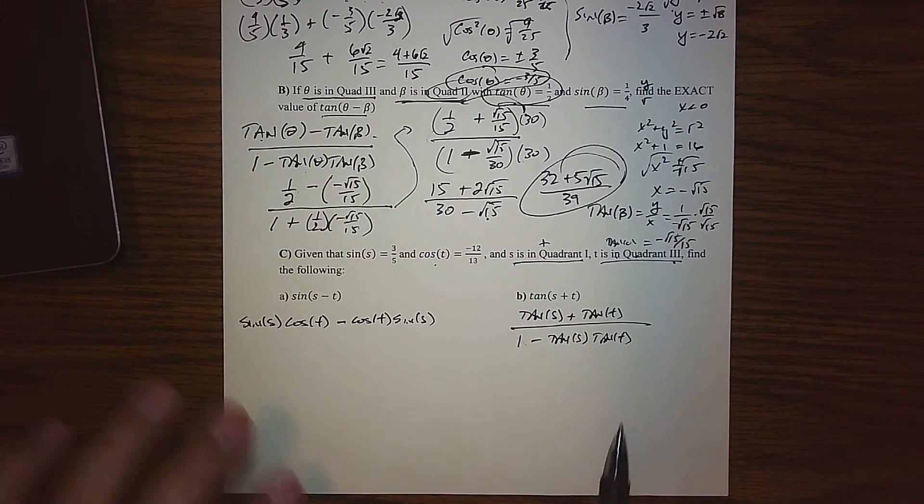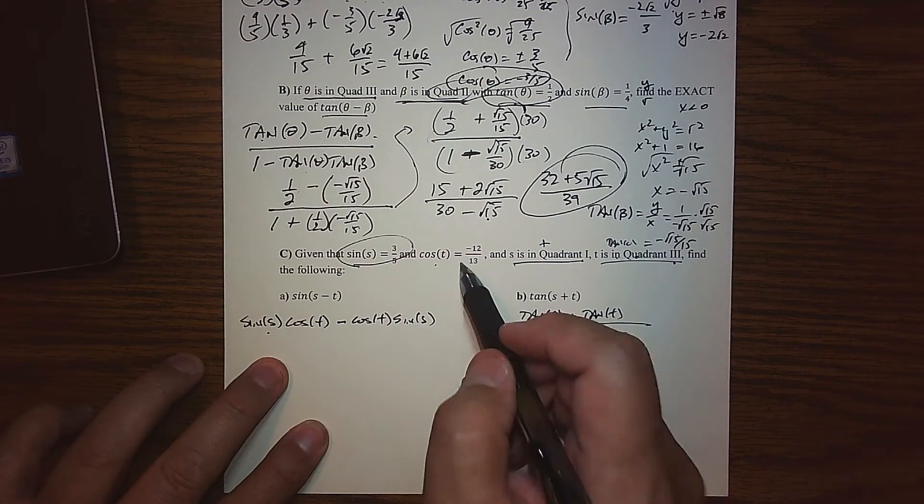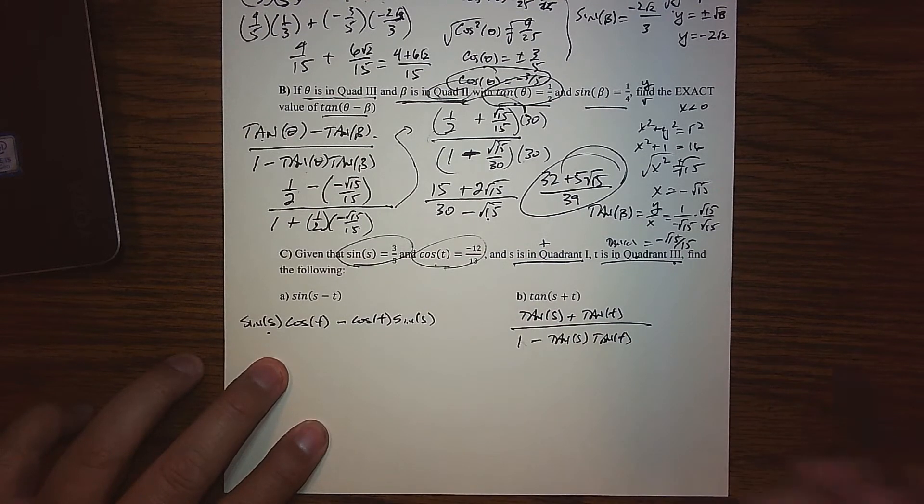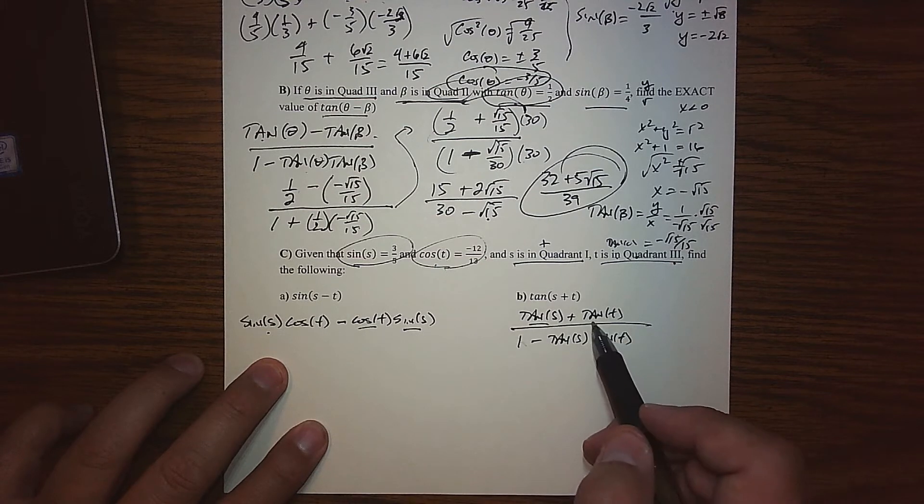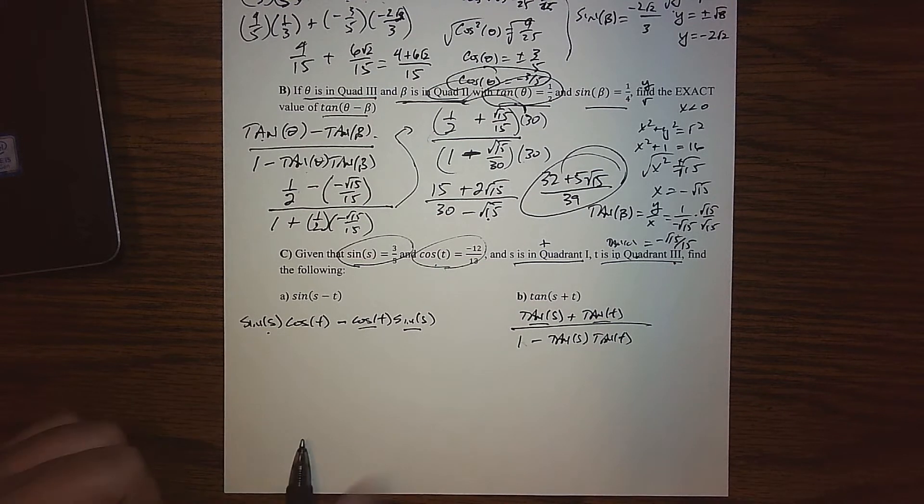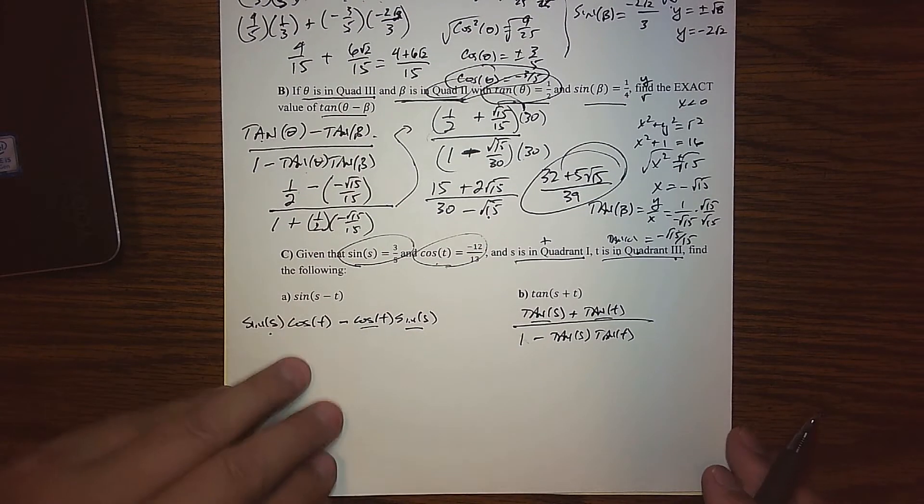So basically, what we have to do is find the sine. We already know the sine of s. We already know the cosine of t, but I need to find the cosine of s, the sine of t, the tangent of s, and the tangent of t. So if I can find those four things, I basically come back, dump it into the formula, and we're off to the races. So we have some analysis to do. So let me come to another sheet of paper.